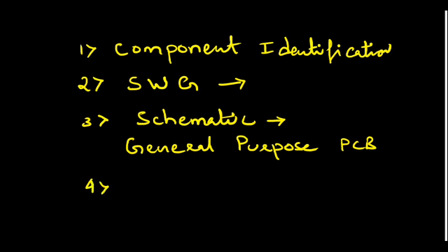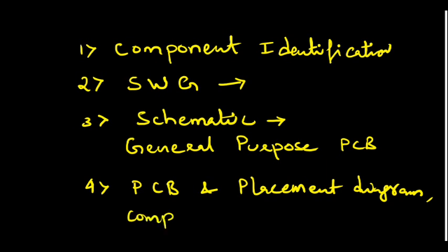The fourth one is that they won't give you the schematic. What they will give you? They will give you a ready-made PCB and placement diagram, and one more thing is required, that is the component list. So they will give you placement diagram, printed circuit board, that is not a general purpose PCB, and a component list. Based on that, you have to assemble the components.